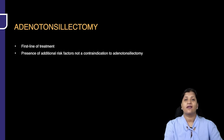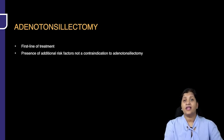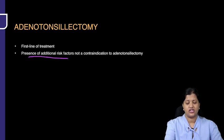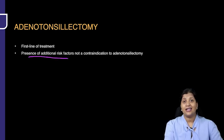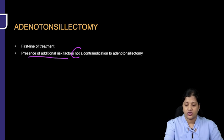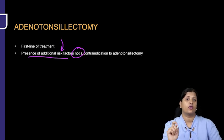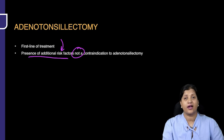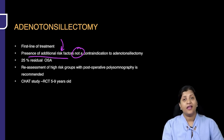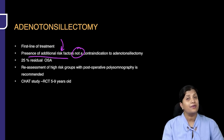Adenotonsillectomy is the first-line treatment and gold standard for children with pediatric OSA. Even if there is a risk factor — such as the child being syndromic or having genetic abnormalities — it is still not a contraindication. Presence of a risk factor does not limit you from doing the surgery. However, in 25% of patients there will still be residual OSA.